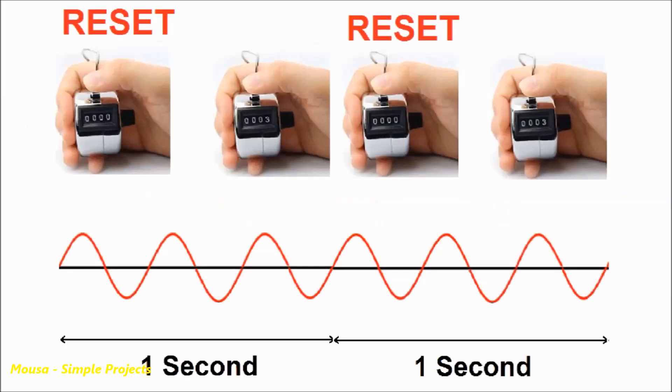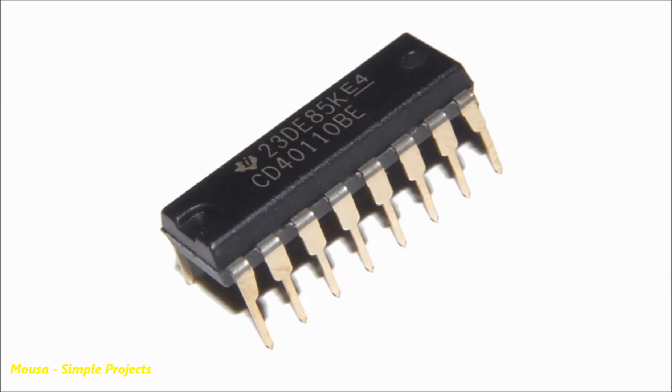So all you need here is a counter that counts the number of cycles in one second, but it has to be reset every one second, otherwise it stays counting to infinity. In this circuit I'm using 4011 IC.